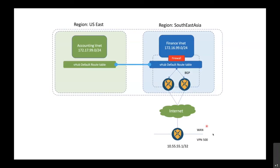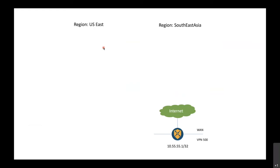This is the first series of the SD-WAN and Microsoft Azure integration use case. We're going to build a topology with a branch router sitting on-premise at the branch, integrated with Azure infrastructure — one vHub in Southeast Asia and another vHub in US East, within the same virtual WAN.